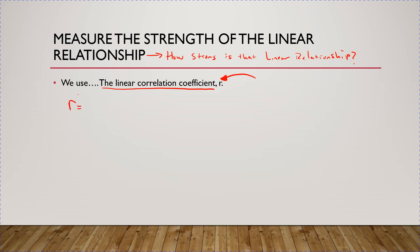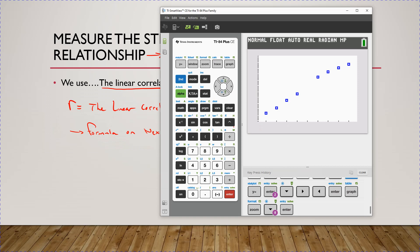Whenever you see r in our lectures, this represents the linear correlation coefficient. I'm going to give you the formula for it on the next slide, but I want you to know that the formula is really complicated, and we're going to use technology — our graphing calculator — to calculate the value of r, the linear correlation coefficient.